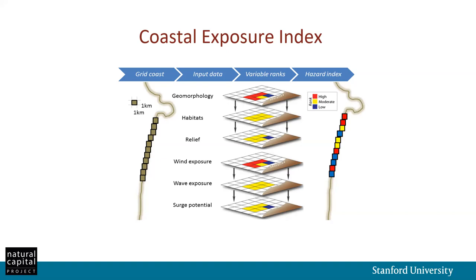One of the primary model outputs is the Coastal Exposure Index — the hazard index that is the geometric mean of all variable ranks for each input. The hazard index is a continuous value from one (lowest risk of exposure to coastal hazards) to five (highest risk). Depending on your application, you can choose to define this categorically — such as high, medium, and low — or assign a threshold.